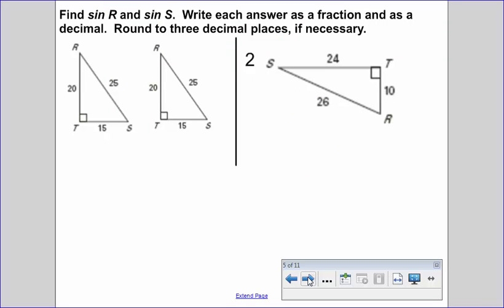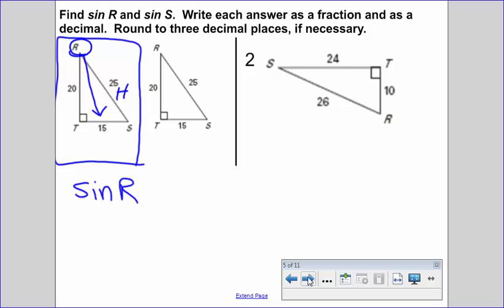Alright, so first thing we're going to do is not make necessarily calculations, but just set up those side ratios. And we're going to find the sine of R and the sine of S in each of these triangles. It says very specifically, write each answer as a fraction and as a decimal. Round to three decimal places if necessary. Well, the first thing I'm going to do is I'm going to take this triangle right here and we're going to look for sine of angle R. So based on angle R, we're going to go through and identify the opposite, the adjacent, and the hypotenuse. Well, the hypotenuse is the easy one. It's the one across from 90 degrees. The opposite would be side TS, so that's going to be O. And then the other guy is my adjacent.